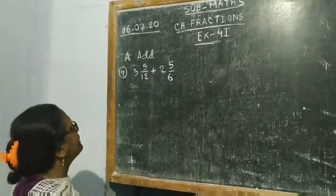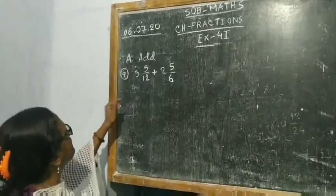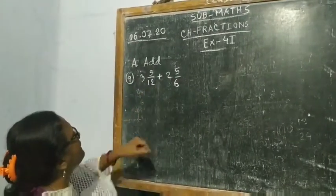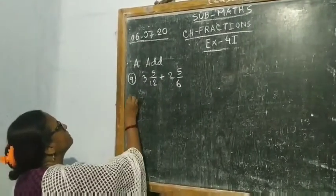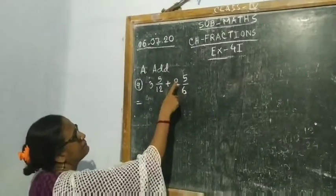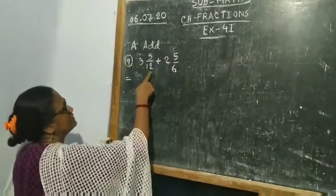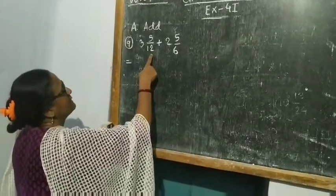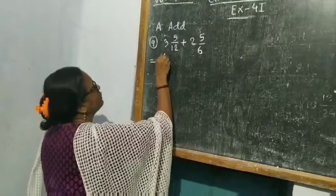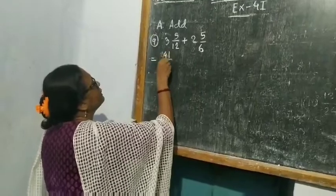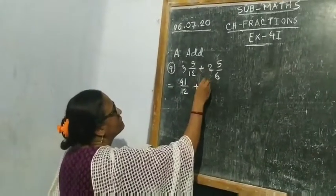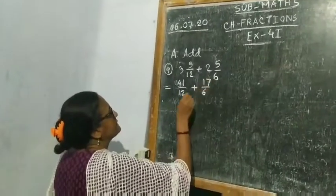Now children, let us do sum number 9. Here you have to add 3 5/12 plus 2 5/6. So 3 5/12 and 2 5/6 are mixed fractions. First we will change them into normal fractions: 3 into 12 is 36, plus 5 is 41 by 12. Plus 2 into 6 is 12, plus 5 is 17 by 6.